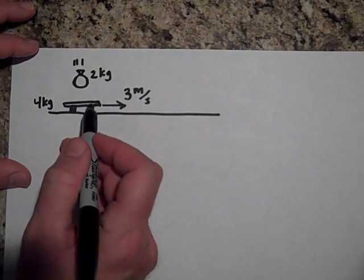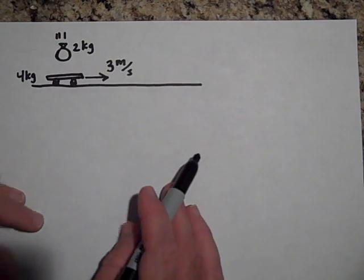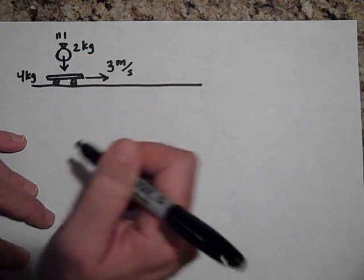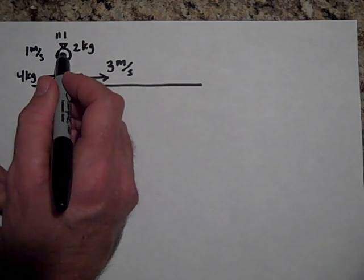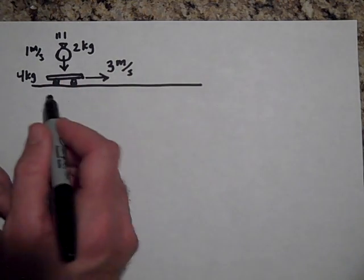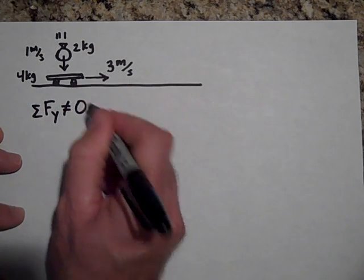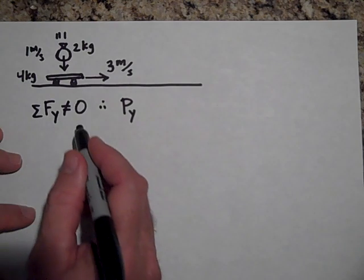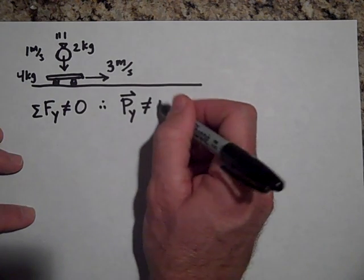Here's another example: a cart rolling along, and we drop a bag of sand into it. The sand is two kilograms, the cart is four kilograms moving at three meters per second in the x-direction. The sand is falling in at one meter per second in the y-direction. When the sandbag hits, the floor pushes up on the system, so the net force in the y-direction does not equal zero. Therefore, momentum in the y-direction before will not equal momentum in the y-direction after.